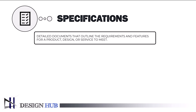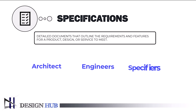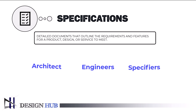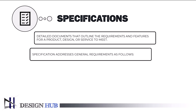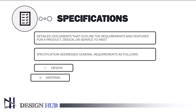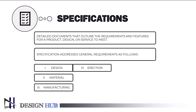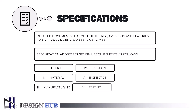Specifications are often a type of technical standard and are usually prepared by architects, engineers, and specifiers. In engineering, specifications are detailed documents that outline the requirements and features for a product, design, or service to meet. They can also refer to a set of documented requirements that material or workmanship must meet to complete an engineering project.